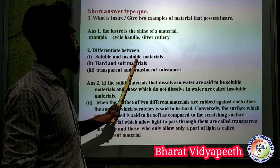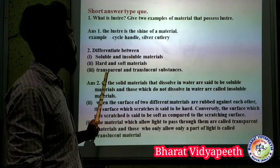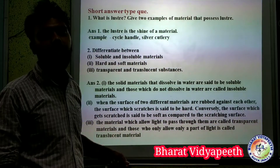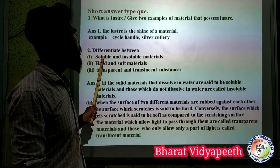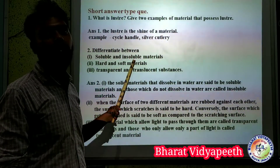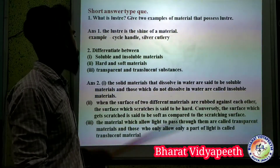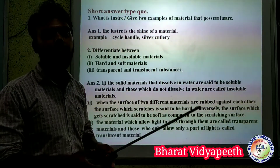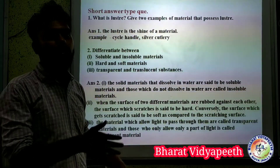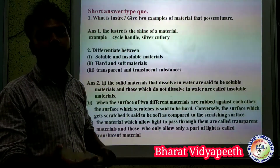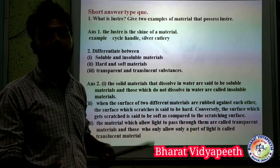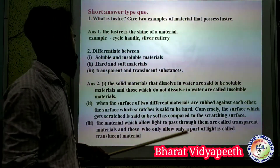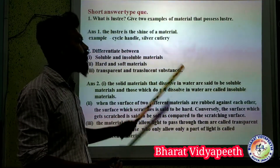Materials can be differentiated as soluble or insoluble. Soluble materials dissolve in water, while insoluble materials do not dissolve in water. Materials also have surface properties: the surface can be a hard surface or a soft surface. We also consider transparent and translucent materials.